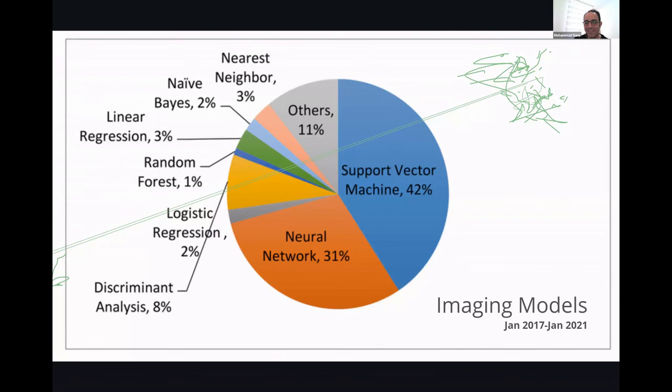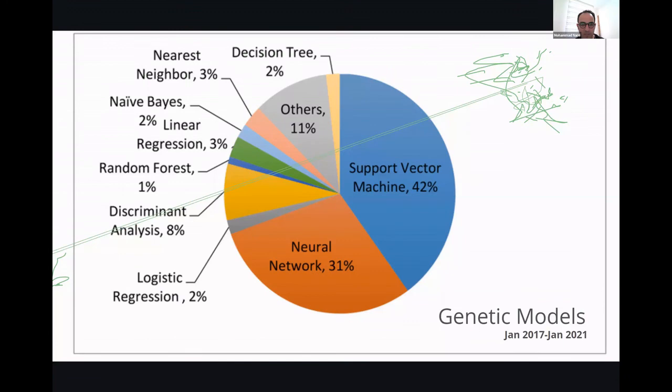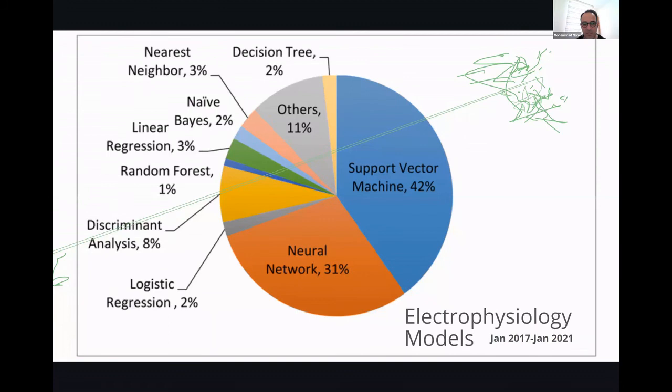For genetic models, again, SVM and neural networks are predominating in the field as the preferred approach being followed by scientists.